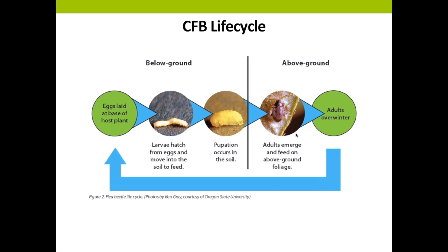This is the life cycle of a flea beetle — it has both a below and above ground life cycle. Adult flea beetles deposit eggs in the soil at the base of their host plants. Larvae hatch from these eggs and feed on below-ground portions of the plant, such as roots and root hairs. However, this doesn't cause the most significant damage — it's the adult feeding on the plant that does.